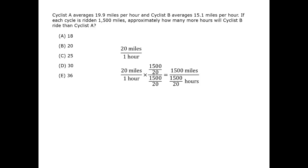We can see, since the speed of B is 15, that B will take 1,500 over 15 hours, which is more because the denominator is smaller.